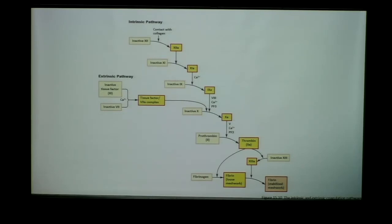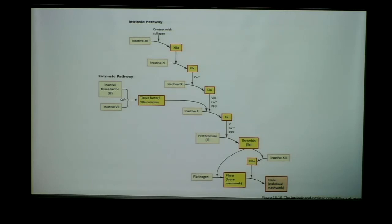The important take-home points: the convergence of both pathways at the activation of factor 10a; the cofactors required for the activation of thrombin — calcium and protein factor 3; the three roles of thrombin — activating fibrinogen to fibrin, activating factor 13 to 13a, and feeding back to further increase platelet aggregation and the substances secreted. Also, factor 13a in its activated form is what stabilizes that initial fibrin clot.